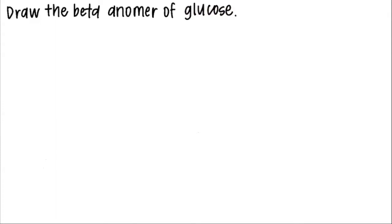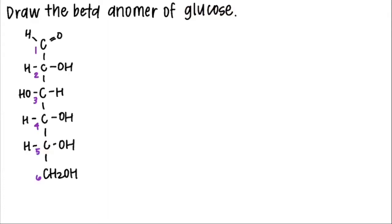The first thing you want to do is write out the Fischer projection of the sugar with your carbons numbered. Since the problem didn't specify whether glucose was in the L or D form, I went ahead and wrote it in the D form since that is how they are naturally found.